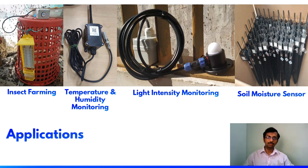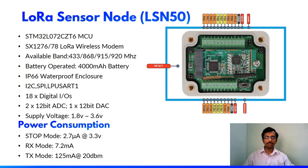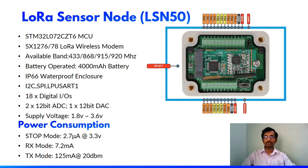We can deploy it anywhere outside. These are the technical specifications of the LSN50 — it basically uses an STM-based chipset, specifically the STM32 L-series MCU. It uses the SX1276 or SX1278 LoRa transceiver options. Based on the frequency band requirement, we can choose between SX1276 or SX1278.